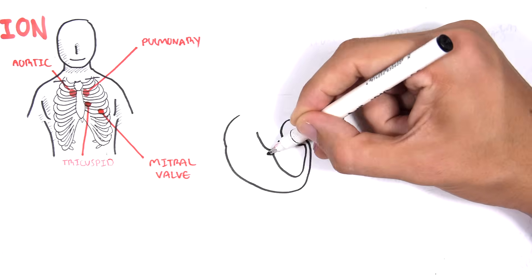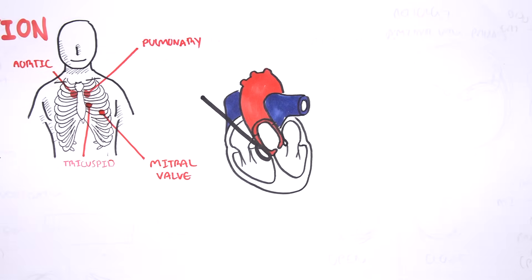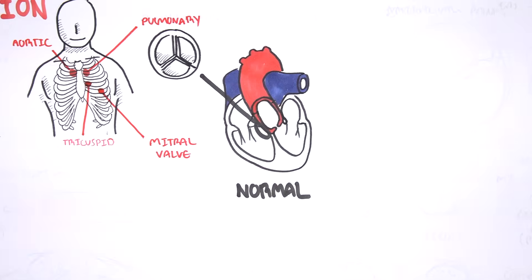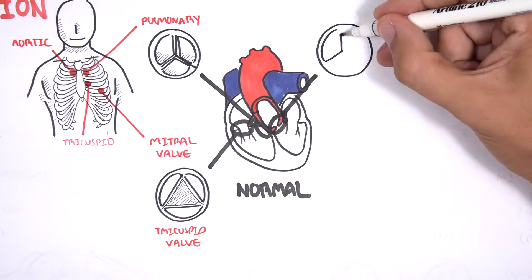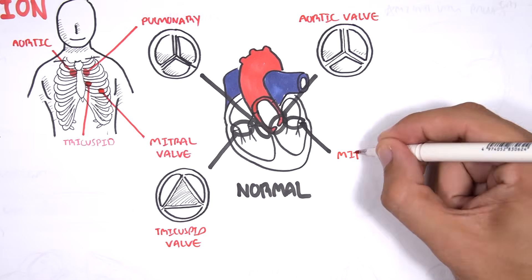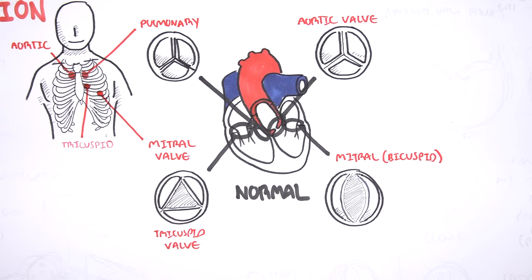Looking at a normal heart, we can see it has four valves. The pulmonary valve is made up of three leaflets. The tricuspid valve has three leaflets. The aortic valve has three leaflets as well. The mitral valve has two leaflets. Out of all the valves, the mitral is normally the only valve with two leaflets, and that is why it is called a bicuspid valve.